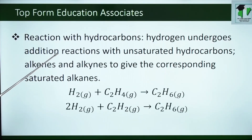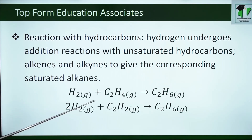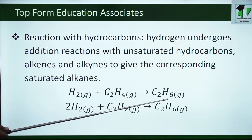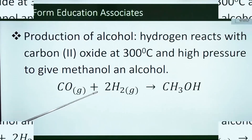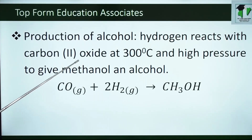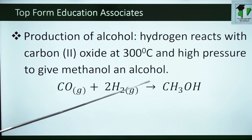Reaction with hydrocarbons. Hydrogen undergoes addition reactions with unsaturated hydrocarbons, alkenes and alkynes, to give the corresponding saturated alkanes — saturated in the sense that they have the complete number of hydrogen atoms in the structure. You can also produce an alcohol using hydrogen. Hydrogen can react with carbon dioxide at 300 degrees C and high pressure to give methanol, an alcohol. Methanol is used in the spirits as we use in hospitals.